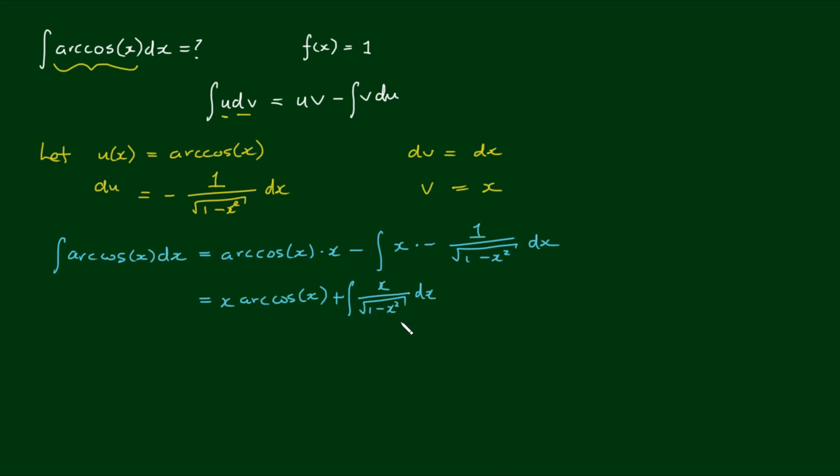So we have a secondary integral here which we have to now solve. In this case we can use a substitution because the numerator here is related to the derivative of the denominator. So let's choose another letter.